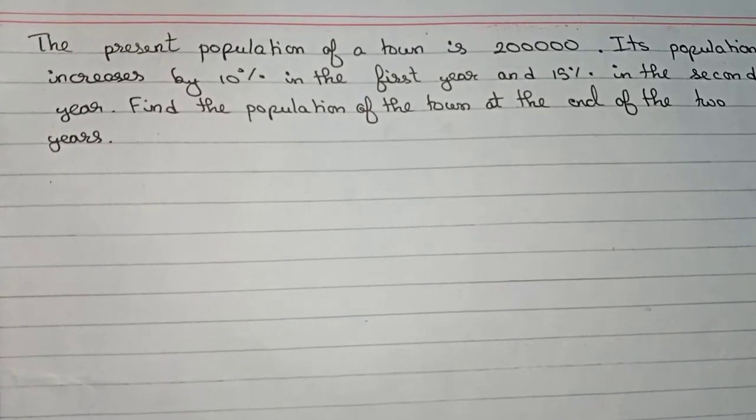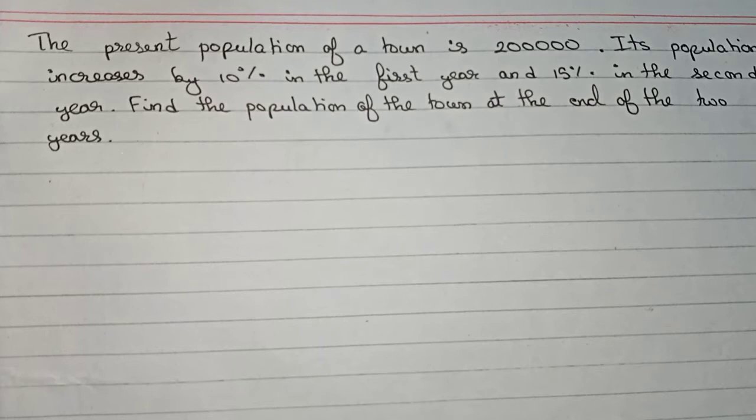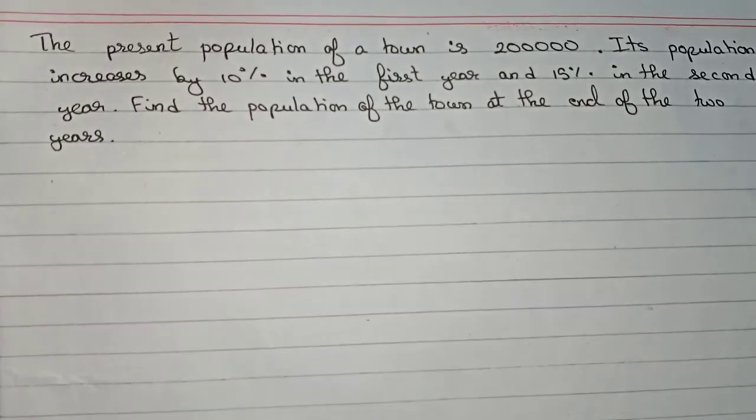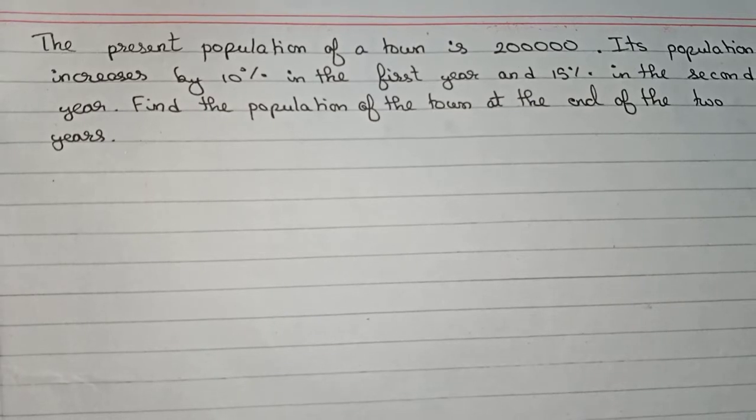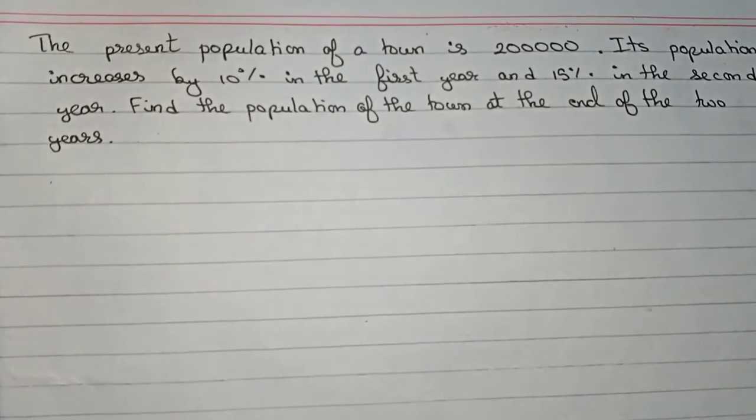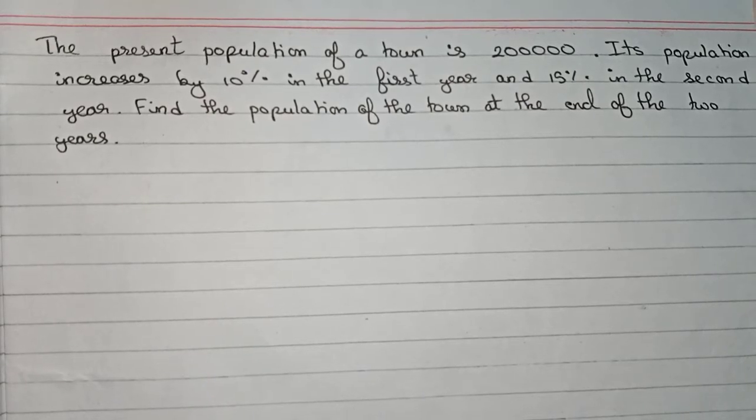Hello guys, welcome to this video. In this video, the question is: the present population of a town is two lakh. Its population increases by 10 percent in the first year and 15 percent in the second year. Find the population of the town at the end of two years. This is the question to solve.